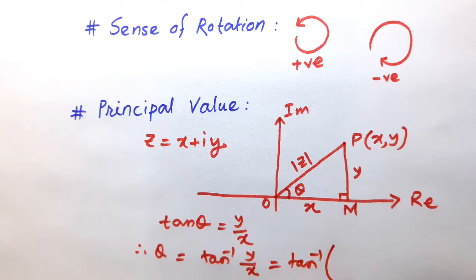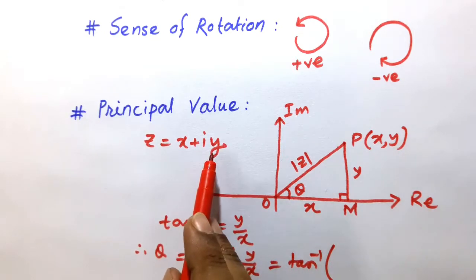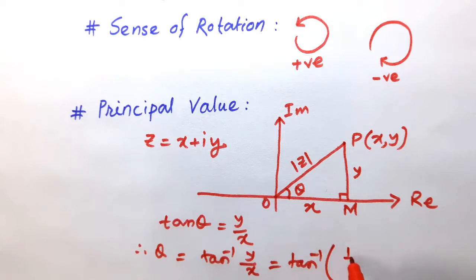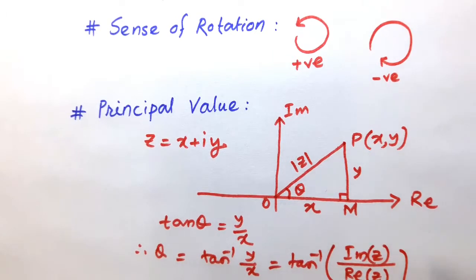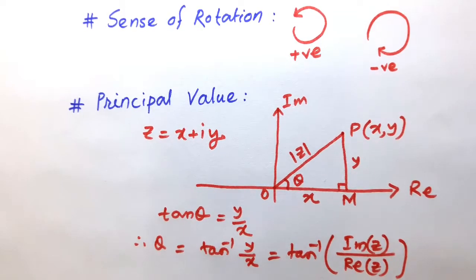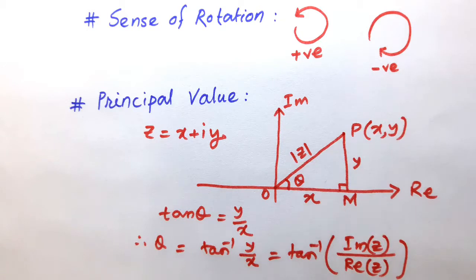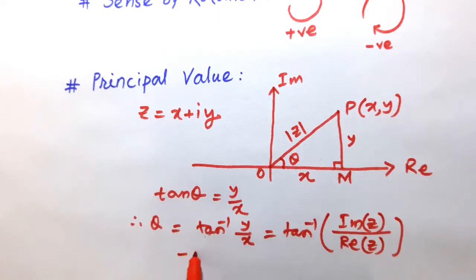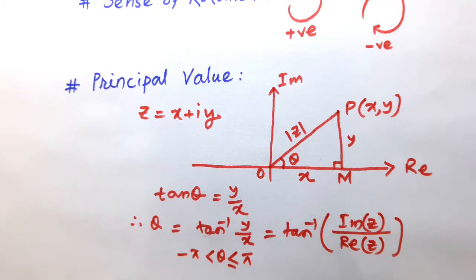Here y is the imaginary part of z, and x is the real part of z, so θ = tan⁻¹(imaginary part of z / real part of z). This angle theta has infinitely many values differing by multiples of 2π. The unique value of theta such that −π < θ ≤ π is called the principal value of the amplitude or principal argument.